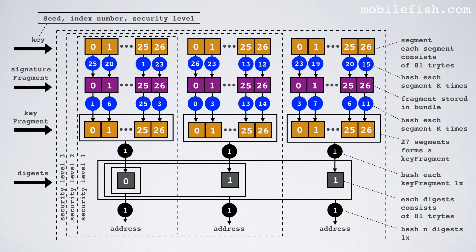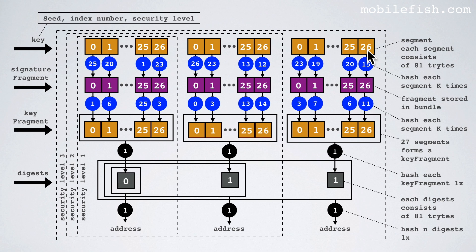Now let's see how a signature is created. This is the key, this is called the signature fragment and this is called the key fragment. The generated key is divided into segments of 81 trits each. Dependent on the selected security level you will have 27, 54 or 81 segments. To create a signature you first calculate the normalized bundle hash. The bundle hash is explained in IOTA tutorial 15 and the normalized bundle hash is explained in IOTA tutorial 16.